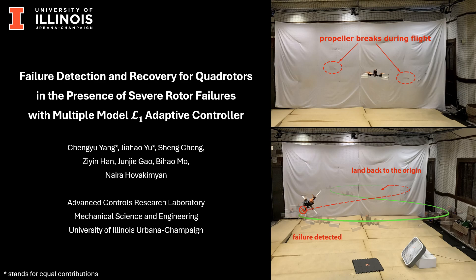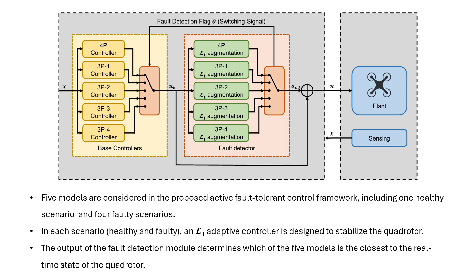In this video, we present the Multiple Model L1 Adaptive Control approach for quad rotor fault detection and recovery, subject to a complete rotor failure. We introduce an active fault-tolerant control framework using the Multiple Model L1 Adaptive Control, which provides a reliable fault detection module to detect the rotor failure and switch to a fitting controller based on the rotor health condition. We consider five models in this framework, including one healthy scenario and four faulty scenarios.